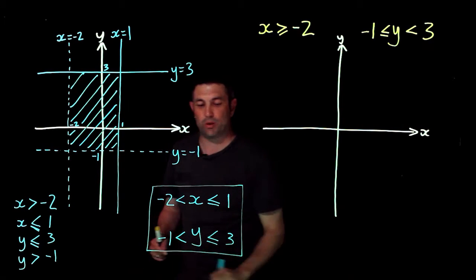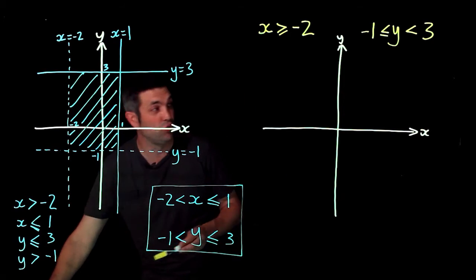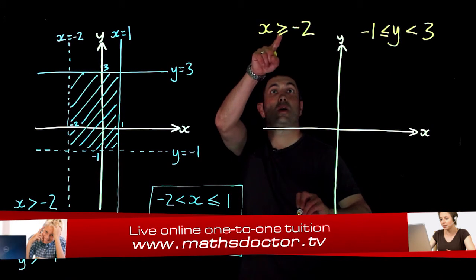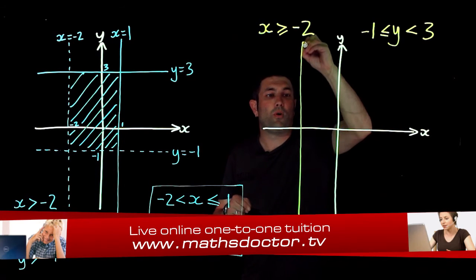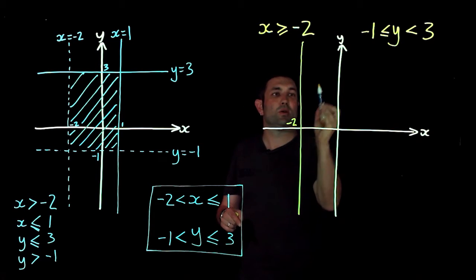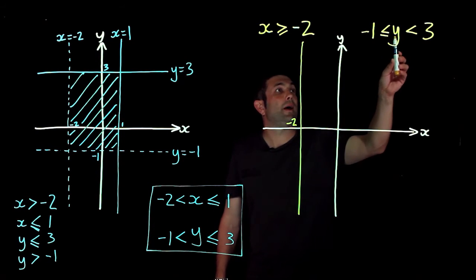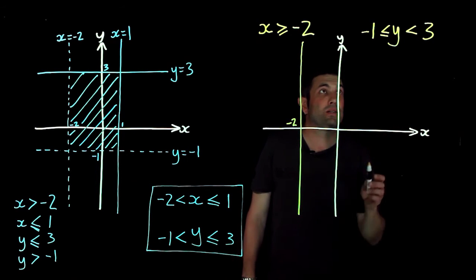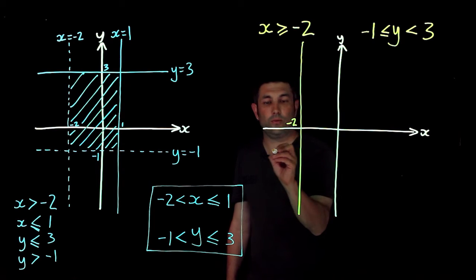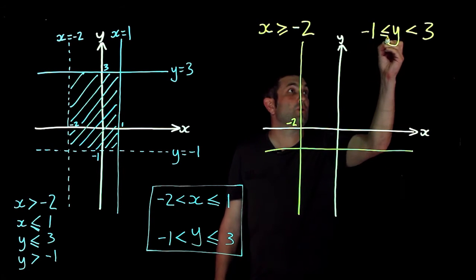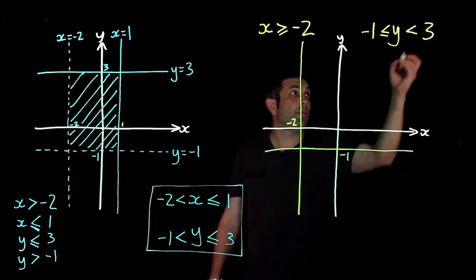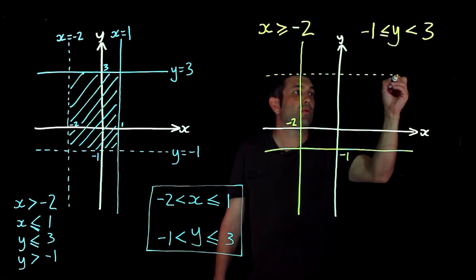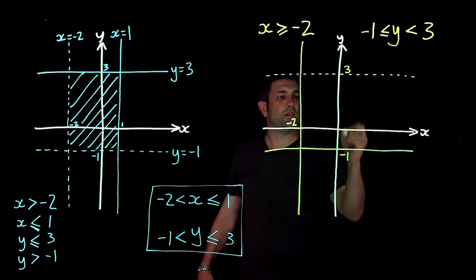For the second question we draw the lines from the inequalities. Draw x equals minus two as a solid line, since it's equal to as well, and we'll shade to the right because it's greater than or equal to minus two. For y: draw y equals minus one as a solid line, then y equals three as a dotted line, because it's not equal to, going through three on the y-axis.